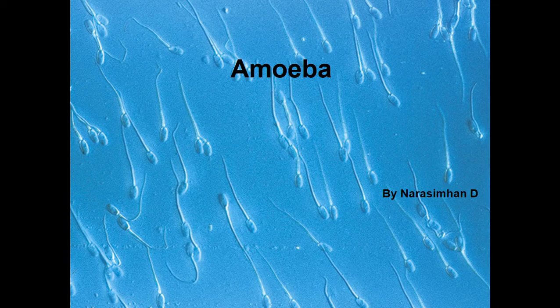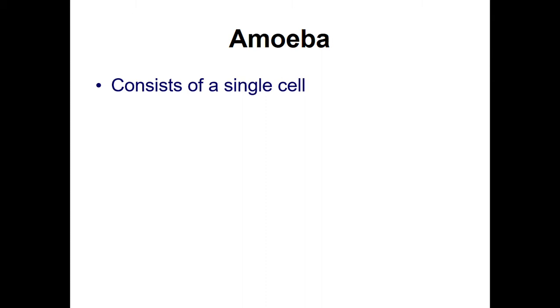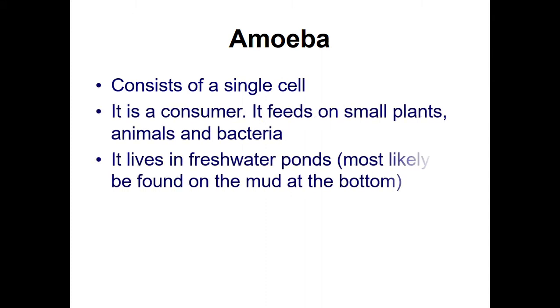Welcome to Learn Biology. Today the topic we're going to discuss is Amoeba — basically sixth standard level. It's pretty easy but we'll talk about things we don't know about amoeba. Amoeba has an irregular shape and doesn't have a definite shape and size. Amoeba consists of a single cell and it is a consumer.